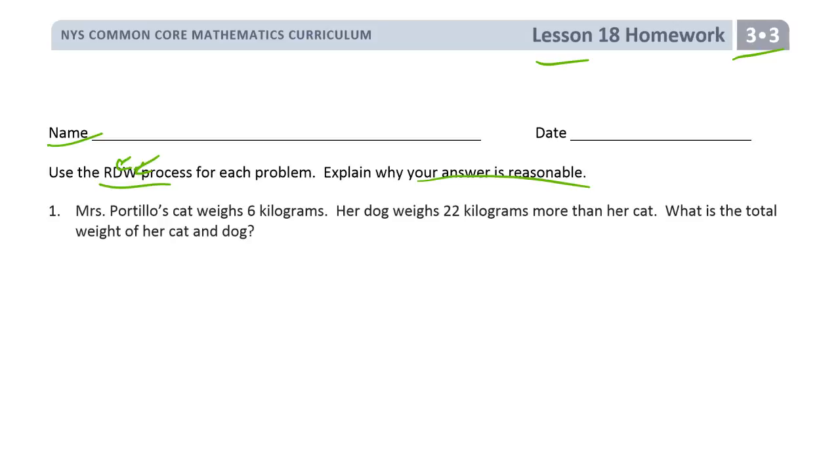Explaining why your answer is reasonable is your picture. Mrs. Portillo's cat weighs 6 kilograms. Her dog weighs 22 kilograms more than her cat. What's the total weight of her cat and dog? So here's the cat. Cat is 6 kg. And the dog weighs, doesn't weigh 22, it weighs 22 more than the cat.